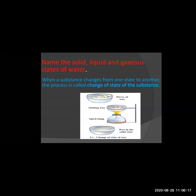When a substance changes from one state to another, this process is called change of state of substances. That means when a solid substance changes to liquid, or liquid changes to solid, or liquid changes to gaseous — all these are examples of substances changing from one state to other. So this process is called the change of state of substances.